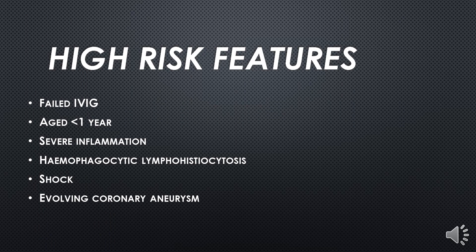High risk features are important to know because the treatment is different. High risk features include: failed intravenous immunoglobulin — which is the immediate treatment of Kawasaki disease; age less than one year; and severe inflammation. Hemophagocytic lymphohistiocytosis (HLH) is also a high risk feature.